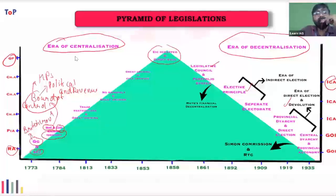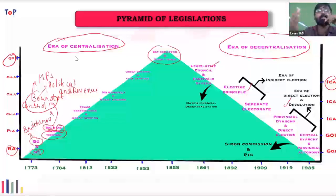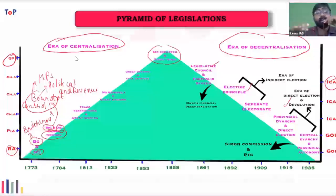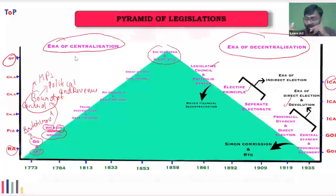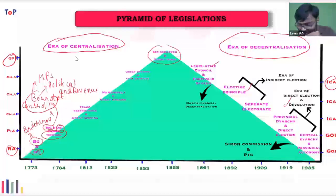Under Pitt's India Act, the territories of the East India Company in India were declared as the Crown's territory — greater centralization. The British designated the East India Company as a representative of the Crown in India. Prior to this, all possessions were under the East India Company, but now the Crown became the sovereign. Also, the nomination of civil services was left to the Court of Directors.